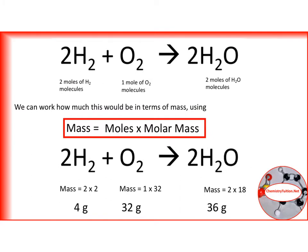If we do that, you can see we have four grams of hydrogen reacting with 32 grams of oxygen and that gives us 36 grams of water.